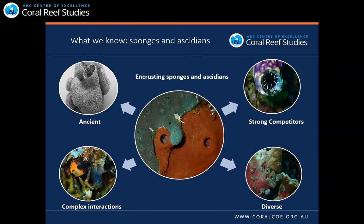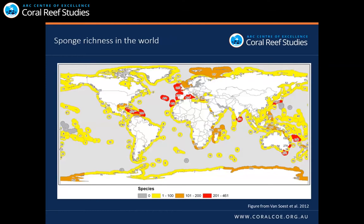We do not know much about sponges and ascidians. We know they are ancient organisms and strong space competitors, especially in space-limited environments like coral reef systems, and that they engage in complex interactions with invertebrates and vertebrates. One remarkable aspect is their diversity — sponges have 10,000 species recorded so far. A biodiversity map constructed eight years ago showed hotspots for sponges, but the main conclusion was that there were deep gaps in knowledge of sponges in tropical systems, with the expectation that more studies would shift those hotspots towards the tropics.